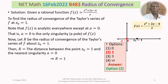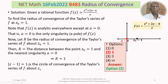Now, what is the circle of convergence? We have found the radius of convergence; the circle of convergence is |z − 1| = 1. That is the circle with center at 1 and radius 1 — that is the circle of convergence and its radius is obviously 1. So |z − 1| = 1 is the circle of convergence of the Taylor series of f about z₀ = 1.